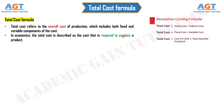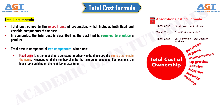Total cost is composed of two components. Number 1: Fixed cost. Fixed cost is the cost that is constant — in other words, these are the costs that remain the same irrespective of the number of units being produced. For example, the lease for a building or the rent for an apartment.